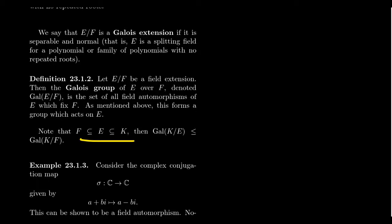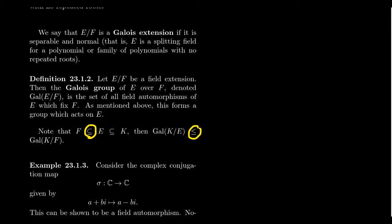If you have a chain of fields F ⊆ E ⊆ K, then the Galois group of K that fixes E is a subgroup of the Galois group of K that fixes F. Notice the reverse chain: F is smaller than E, but Gal(K/E) is smaller than Gal(K/F). If you fix E, you automatically fix F since F ⊆ E. But there could be automorphisms fixing F that move elements of E not in F, so Gal(K/F) can be strictly larger.